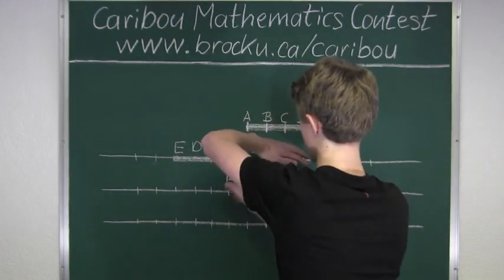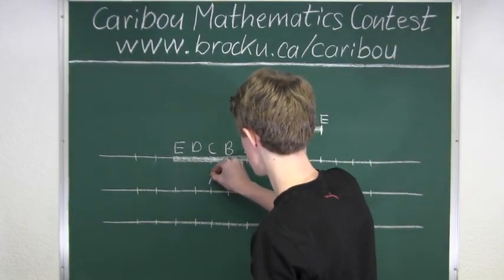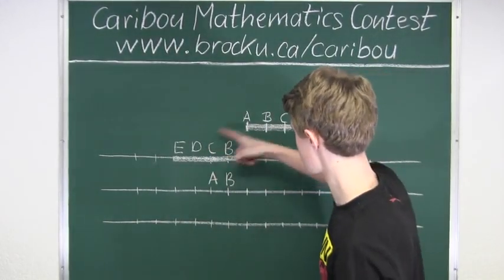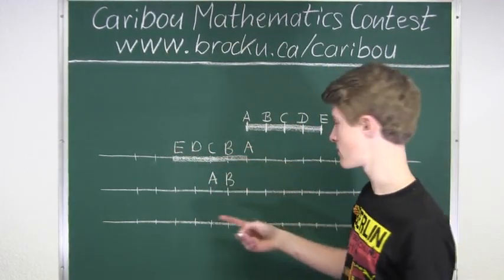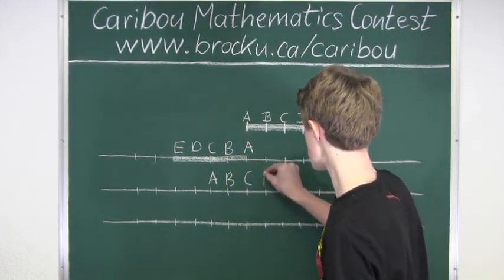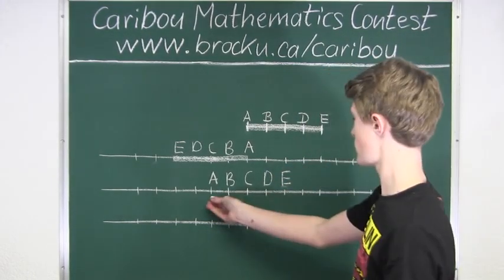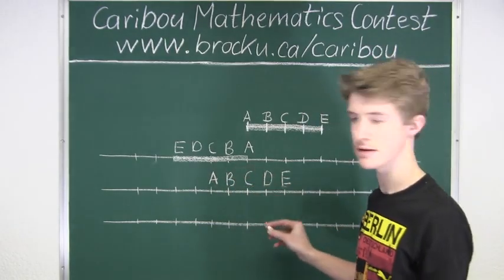And we know that by putting it over, this A comes over here, and then these are just flipped. So C would come, and then of course D and E would follow. And of course we know that this is the rod from A to E.